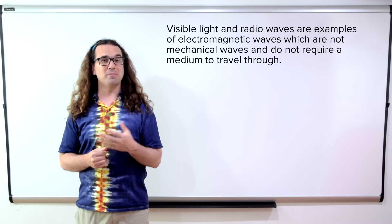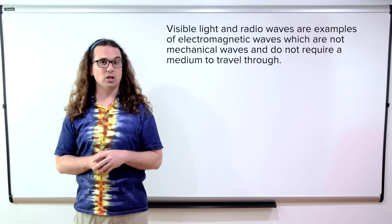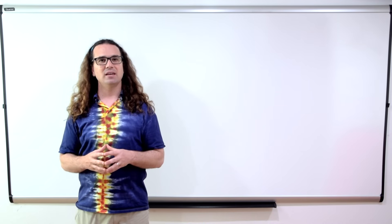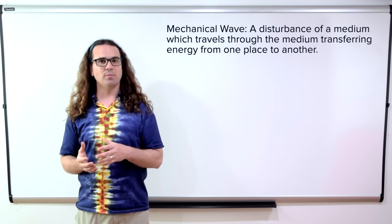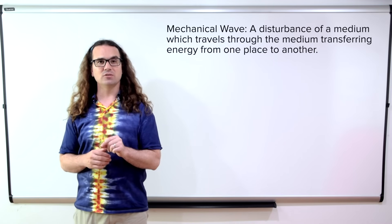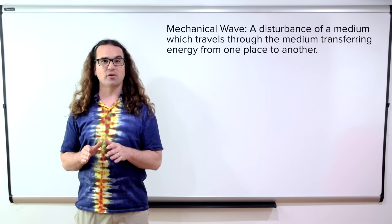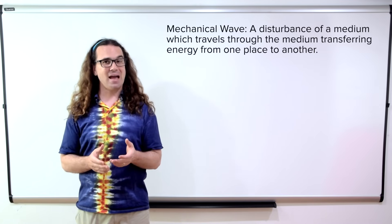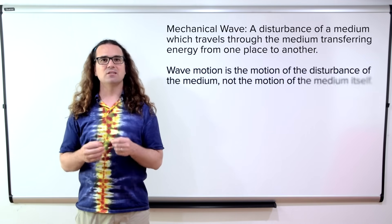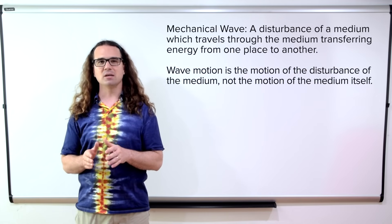This lesson is about mechanical waves of which sound waves, seismic waves, and waves on a string are all examples. A mechanical wave is a disturbance of a medium which travels through the medium, transferring energy from one place to another. Please realize waves transfer energy from one location to another, however, they do not move matter from one location to another. Wave motion is the motion of the disturbance of the medium, not the motion of the medium itself.